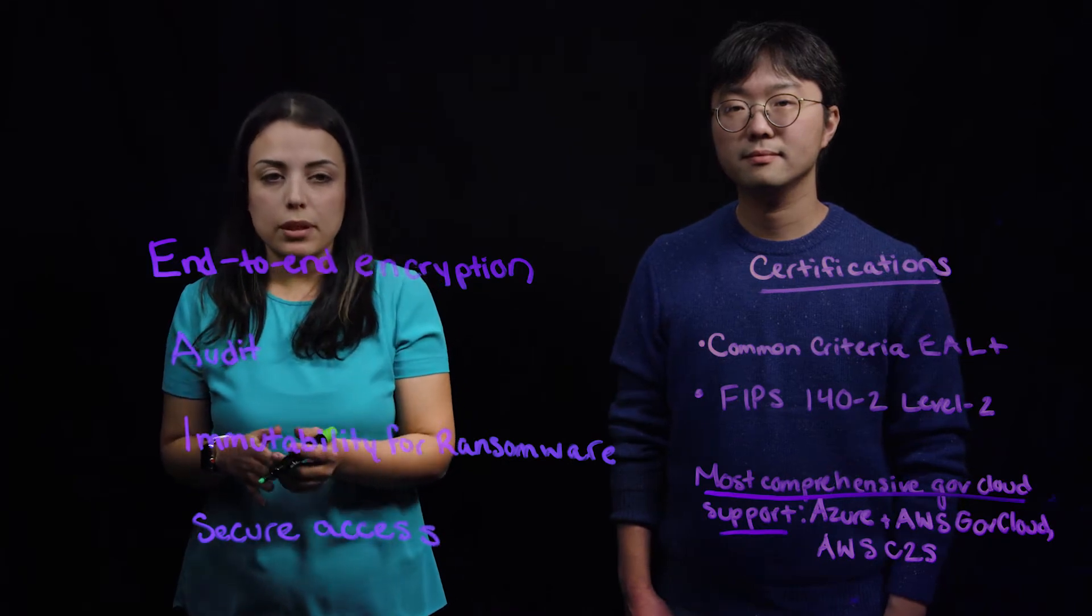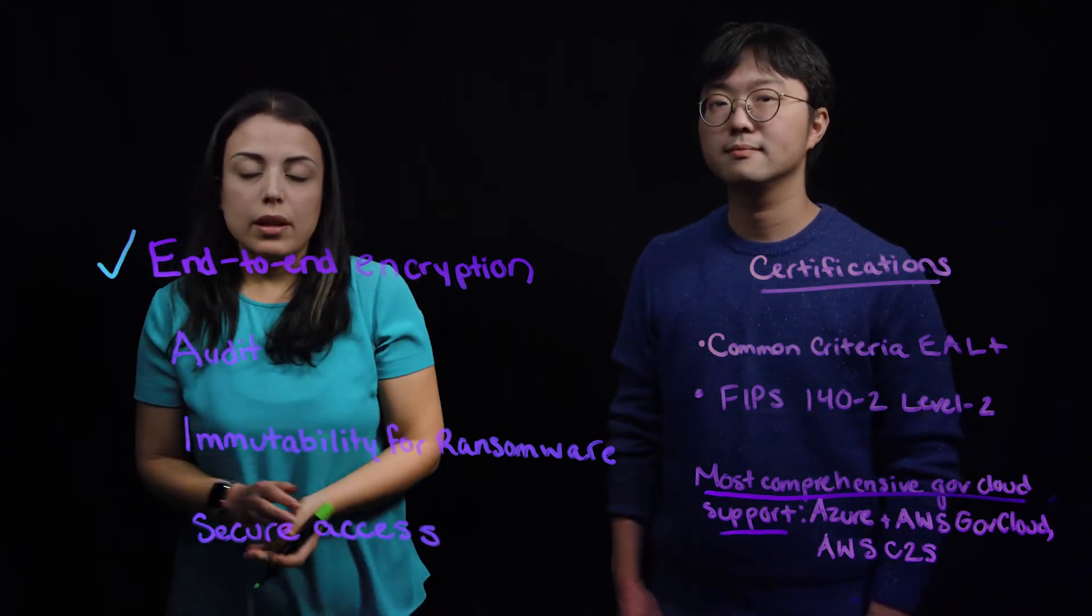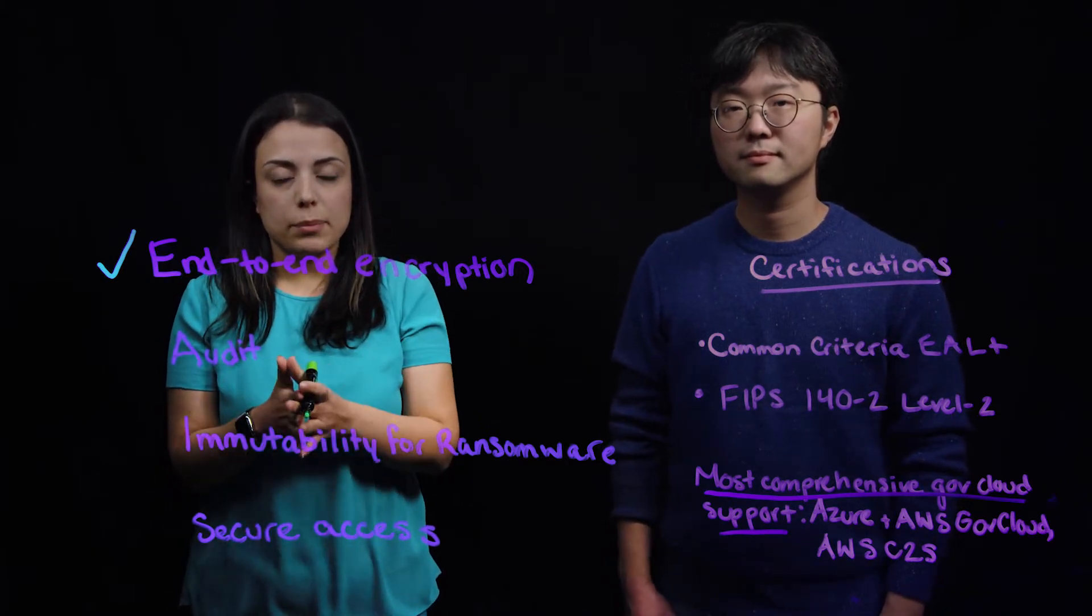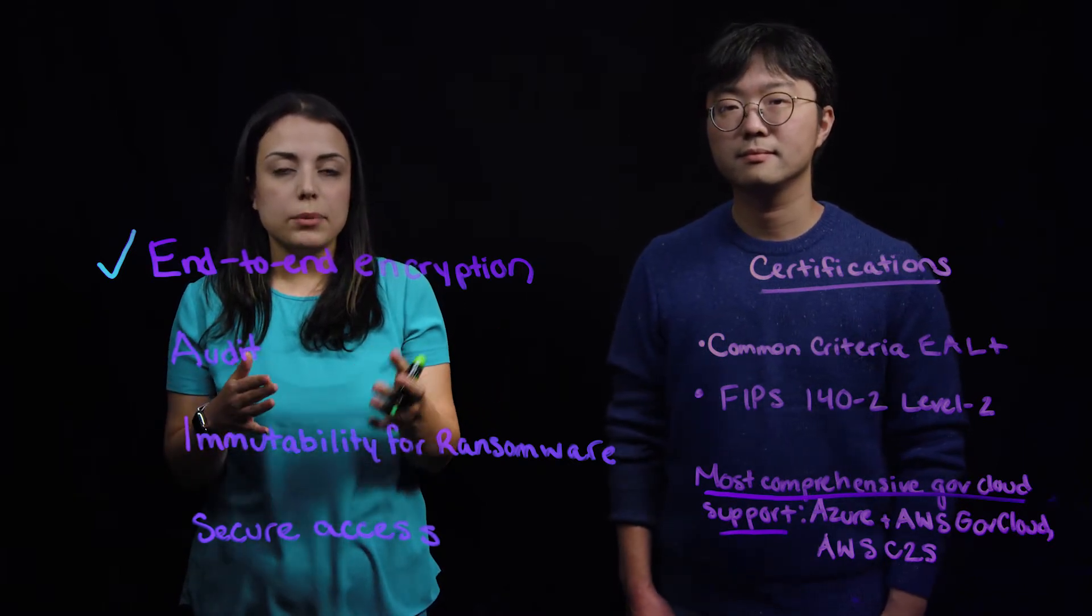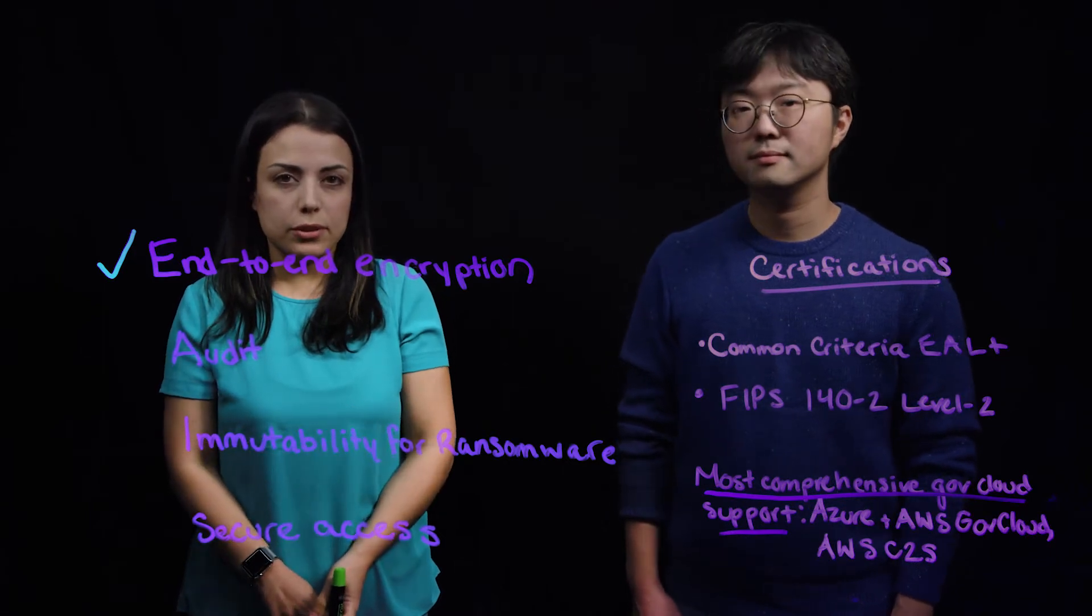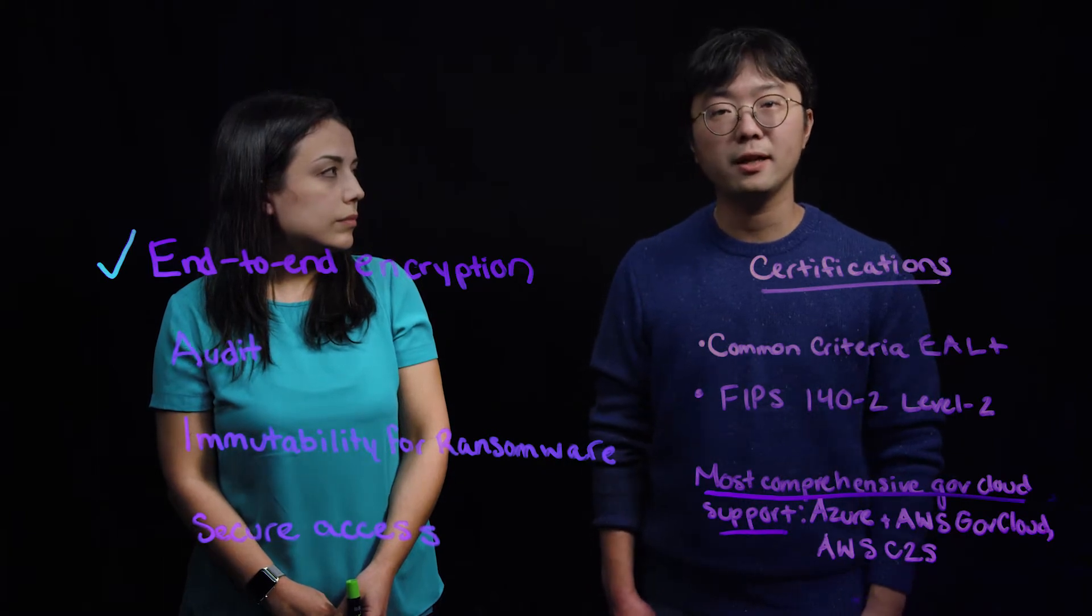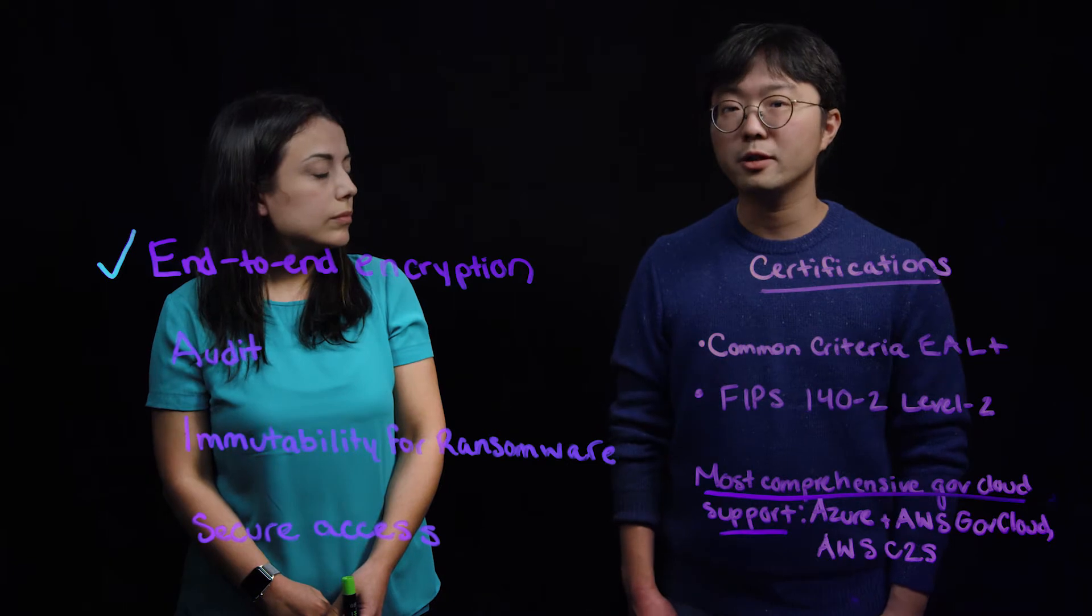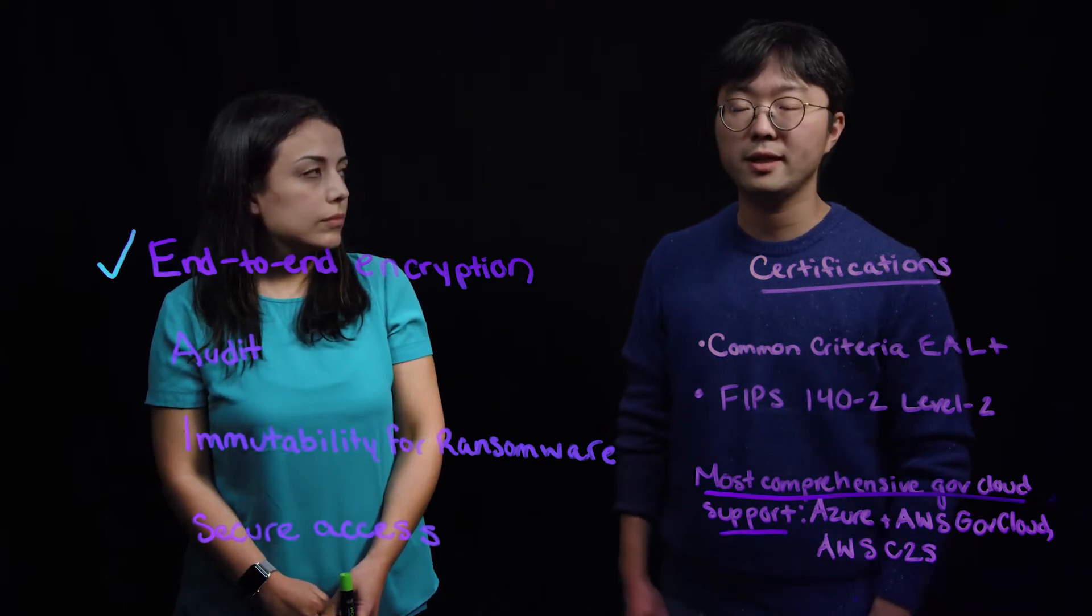The first principle is end-to-end encryption. Rubrik makes sure that data, as soon as it leaves the data sources, is encrypted, and is also encrypted in flight, meaning that it's encrypted during operations like replications or archival to the cloud. Also, when data-at-rest encryption is enabled, both data and metadata are encrypted. Most other solutions only encrypt data. We will discuss how this works later in this video.